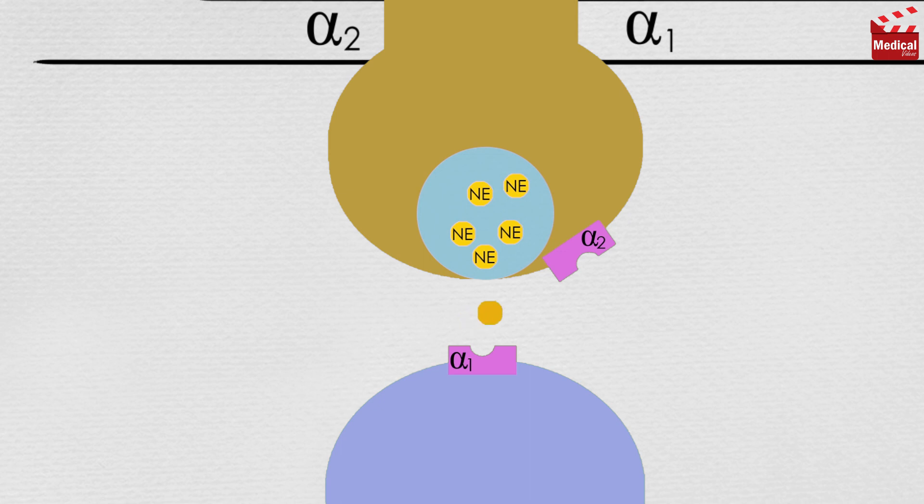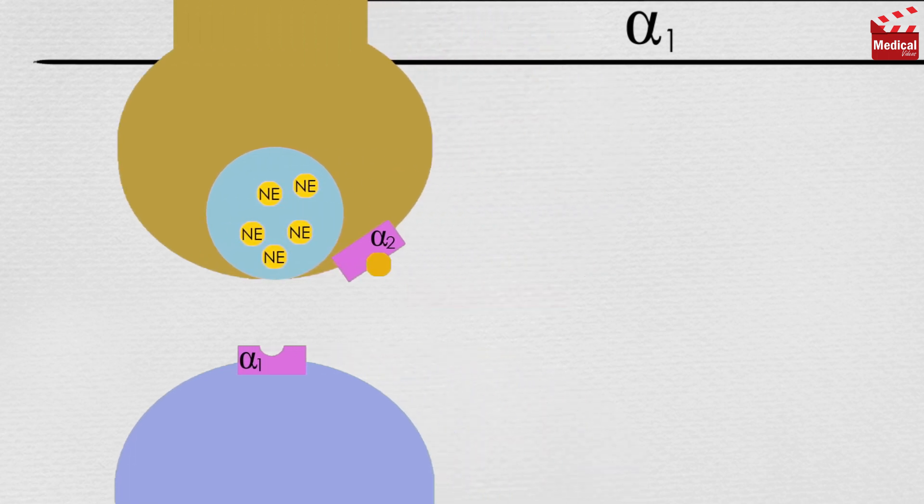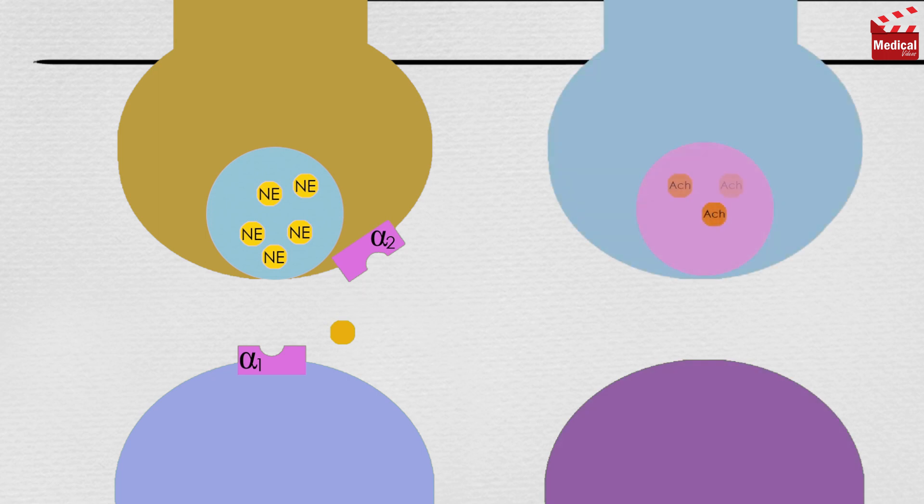Stimulation of alpha 2 receptors causes feedback inhibition and inhibits further release of norepinephrine from the stimulated adrenergic neuron. Alpha 2 receptors are also found on presynaptic parasympathetic neurons. Norepinephrine released from a presynaptic sympathetic neuron can diffuse and interact with these receptors, inhibiting acetylcholine release.